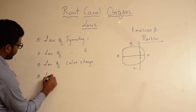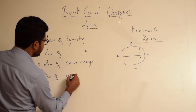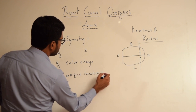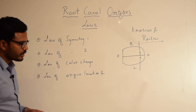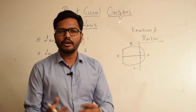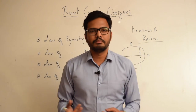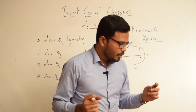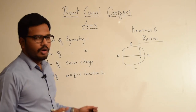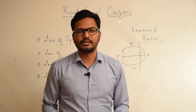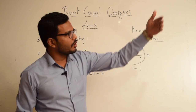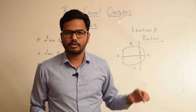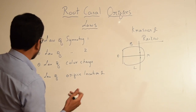Coming to the next law: Law of Orifice Location 1. If we assume a room as a pulp chamber, with four walls, a roof, and a floor, then according to this first law, orifices are usually located along the line angles — in other words, at the junction of the wall and the floor. We usually find root canal orifices at those junctions.